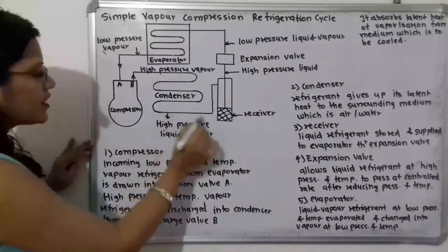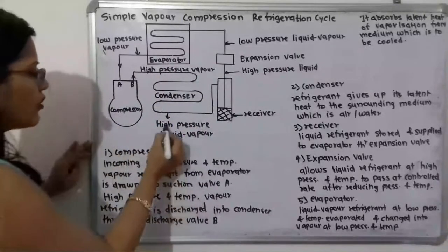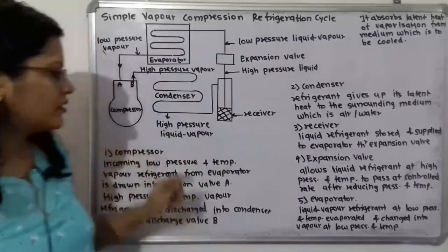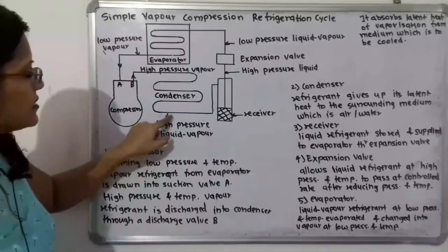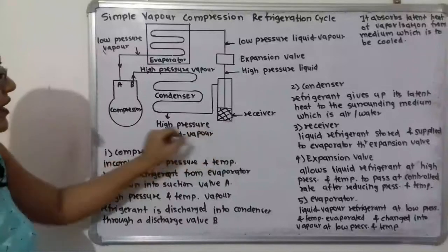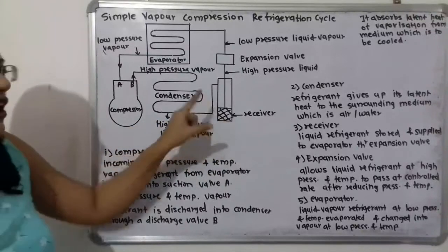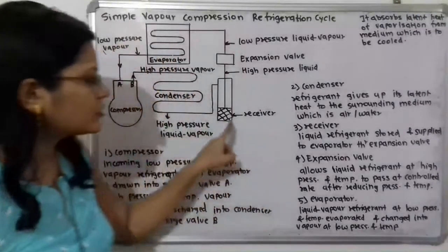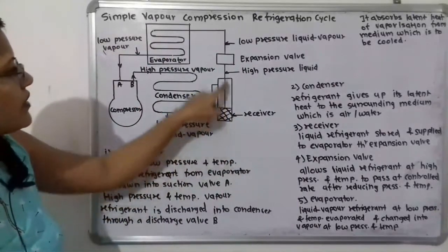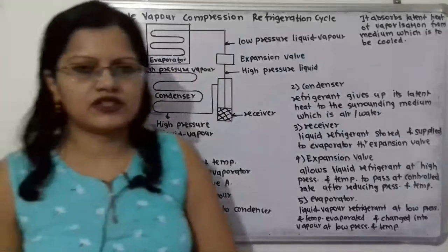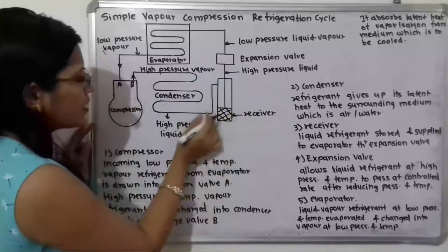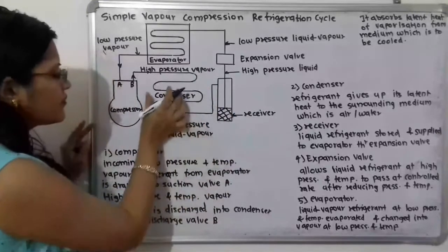When the cooling process is completed in the condenser, the refrigerant is in the form of a high pressure, high temperature liquid-vapor mixture. It is then supplied to the receiver. The function of the receiver is to store this incoming refrigerant from the condenser — now in liquid form — and then supply it to the evaporator through the expansion valve.